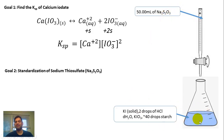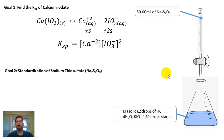And in the flask, depending on the experiment, you're going to put the KI solid, some HCl to make it acidic, water, and KIO3 if you're going to standardize. To figure out the Ksp, you're going to put the filtrate in, and then some starch to give it a blue color.